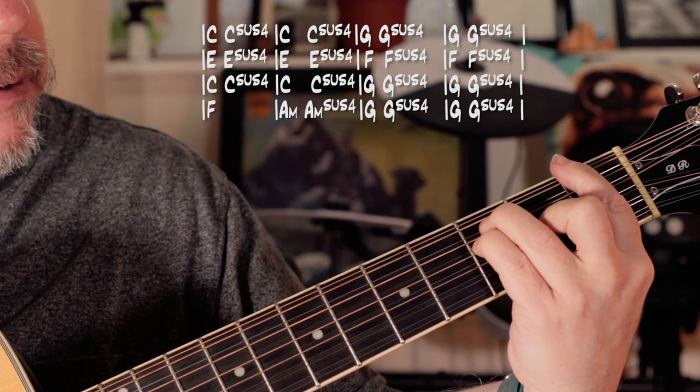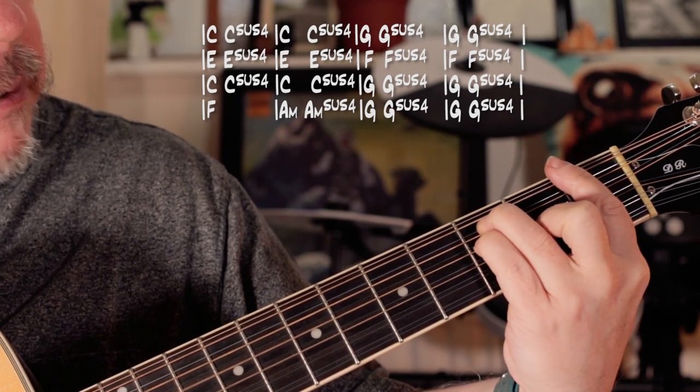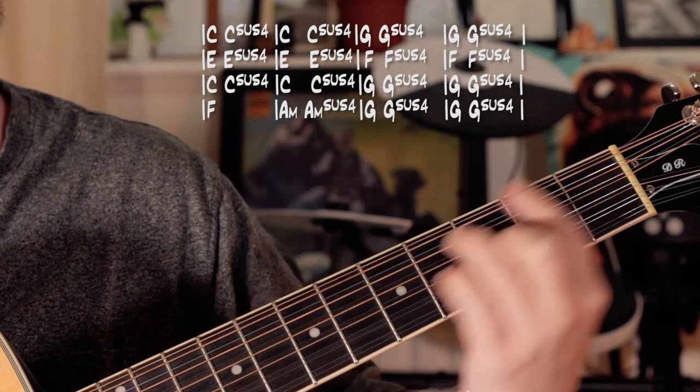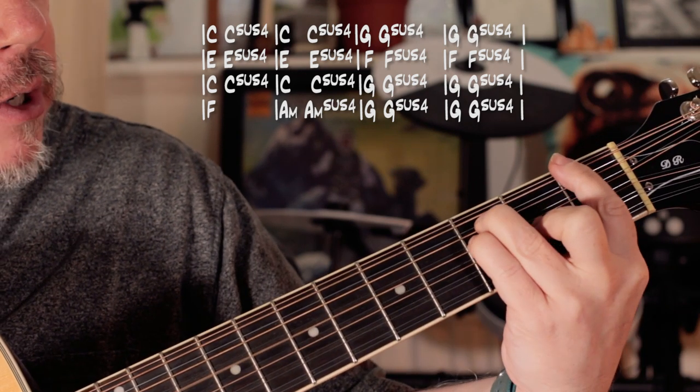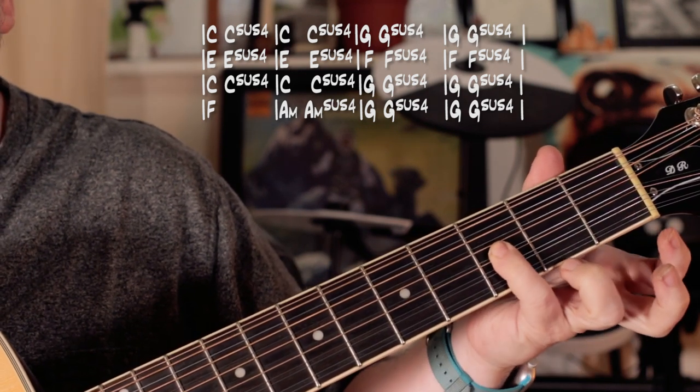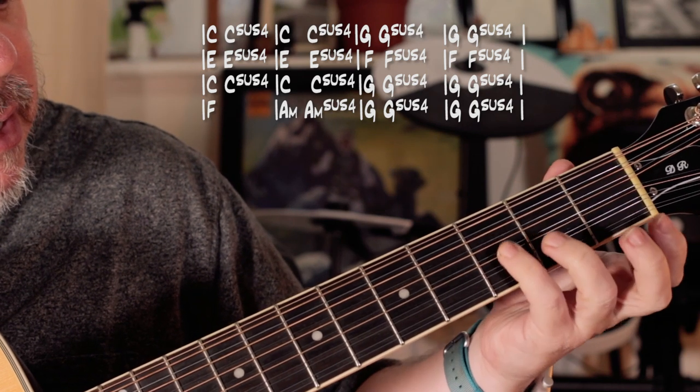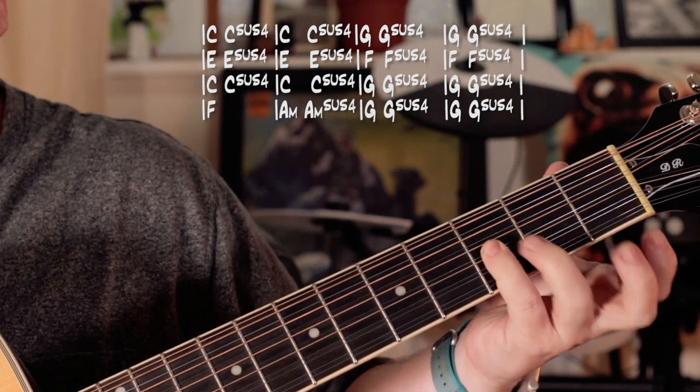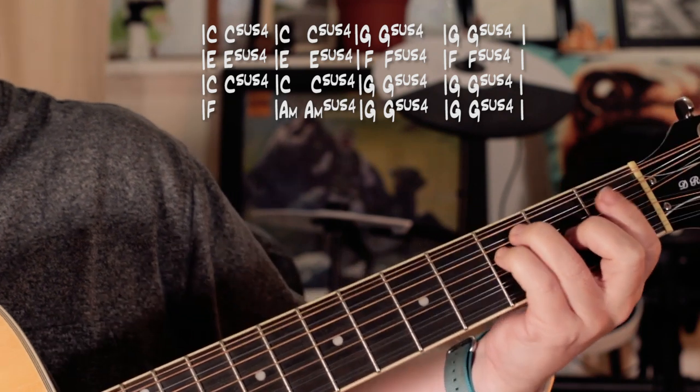And then we go to an F. A little more tricky, it's a bar chord and then I'm just using my pinky to add the B flat there to get a sus4. But if you find that too tricky, just stick on an F. There are no rules.